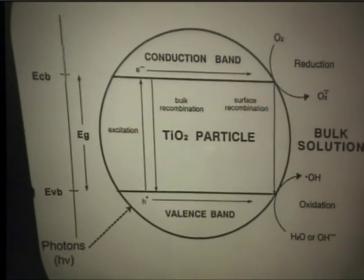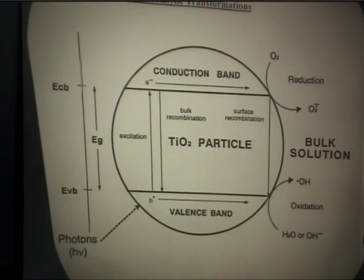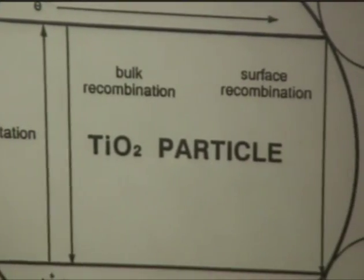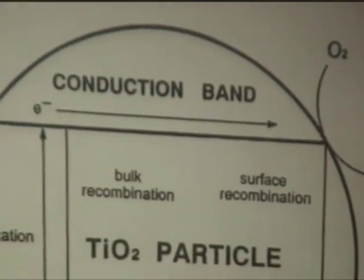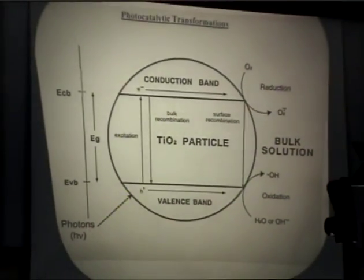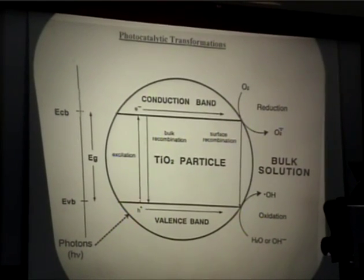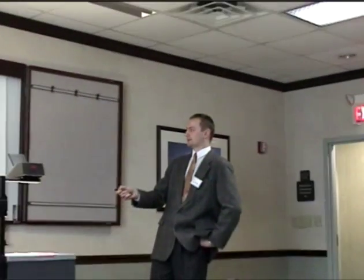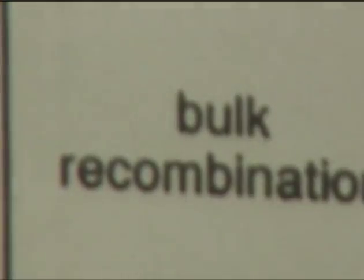Briefly, how photocatalysis takes place. This is a TiO2 particle — the most studied and well-known photocatalyst. It possesses semiconductor properties, which is a band gap. When we shine light on it, we promote an electron from the valence band of the semiconductor to its conduction band. Electrons and holes can travel to the surface of the particle and produce radicals, which can attack organic matter in either gas or water and non-selectively destroy it to CO2 and water.